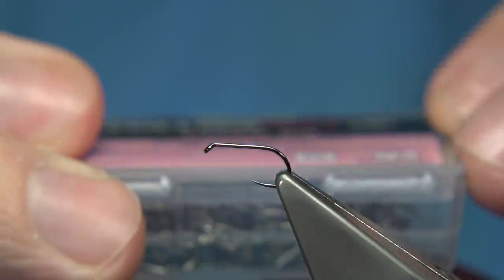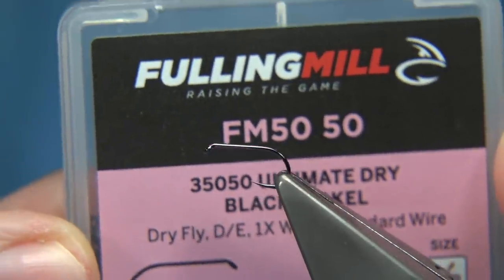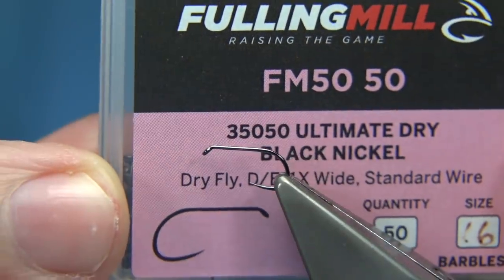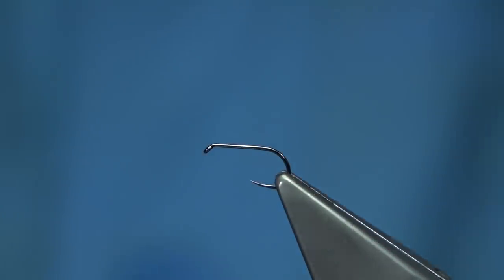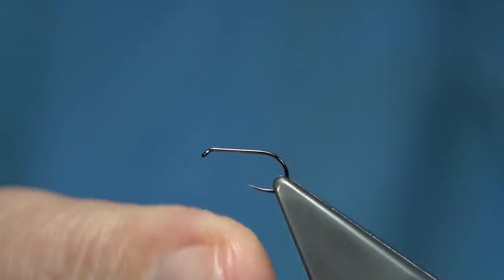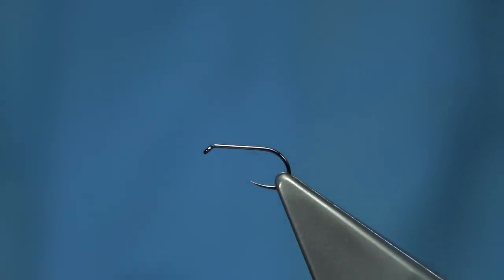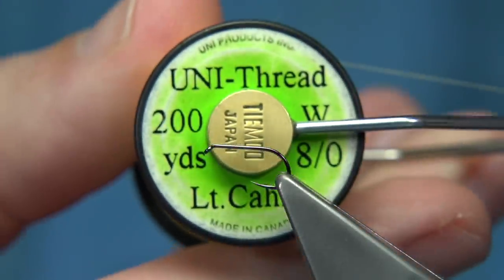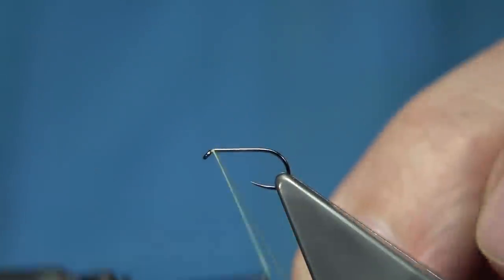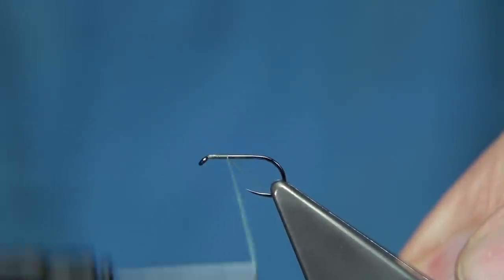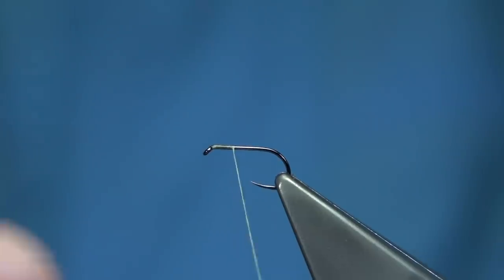The hook I'm using is Fulling Mill, black nickel—you can use bronze if you wish. It's a size 16. Nice hook, one I like. The thread I'm going to use is a light Cahill 8-0. First thing we do is wax the thread, start at the eye, and come down about eight to ten turns of thread just to get it started.